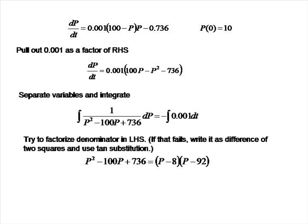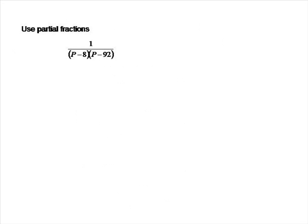The quadratic p² minus 100p plus 736 can be factorised into (p minus 8)(p minus 92). So the integrand on the left-hand side can be written as 1 over (p minus 8)(p minus 92). To integrate this fraction we're going to use partial fractions, writing the integrand as a constant A over (p minus 8) plus a constant B over (p minus 92).